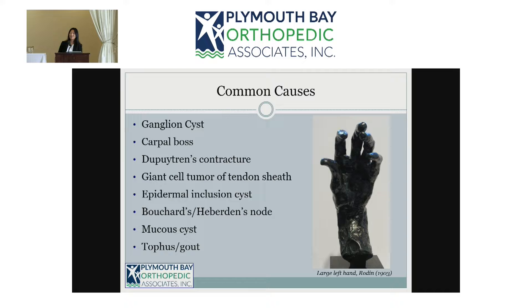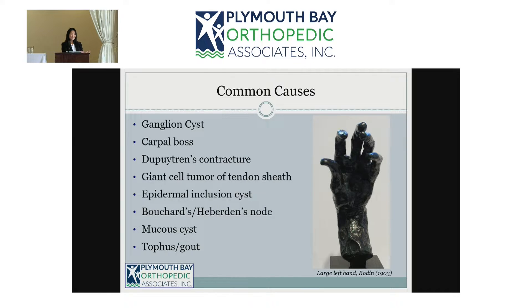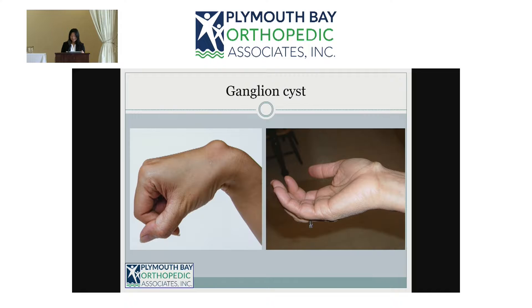There are a lot of common causes for masses that can happen in the hand and wrist. It seems like a long list but I'll go through them pretty quickly. I'm going to talk from proximal to distal in the hand, starting with ganglion cysts — this is the most common mass that you see in the hand.